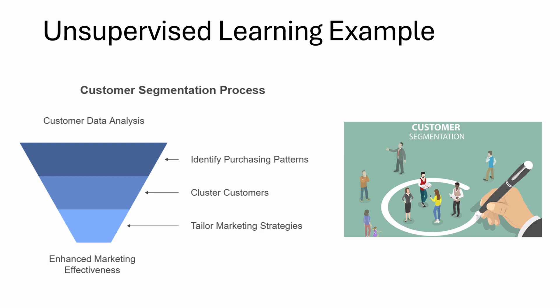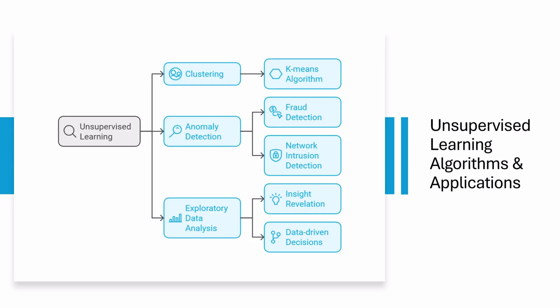The algorithm can analyze purchasing behavior and cluster similar customers together, allowing the company to tailor its marketing strategies to different segments without prior knowledge of what those segments might be. A common technique in unsupervised learning is clustering, which organizes data points into groups based on similarity. K-means clustering is a popular algorithm in this domain. Another application is anomaly detection, which identifies unusual patterns — crucial for detecting fraud in financial transactions or network intrusions in cybersecurity.